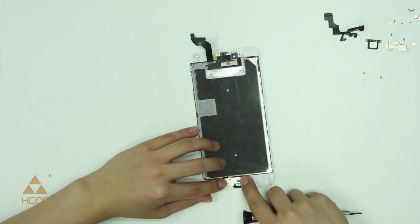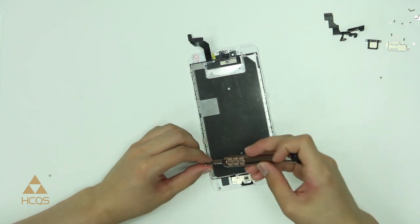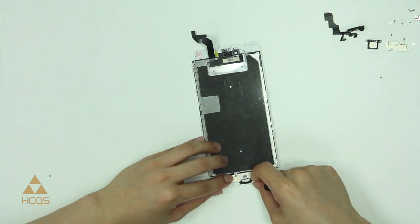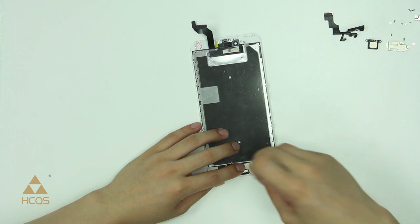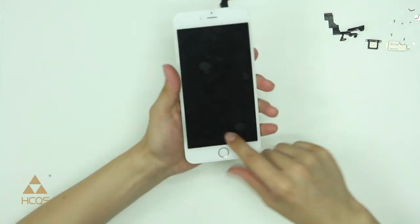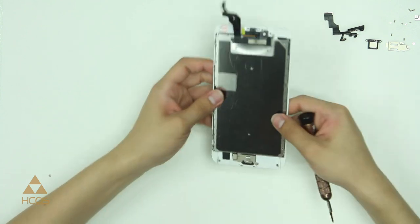Once you have your screws installed, you can go ahead and put the metal panel back behind the home button. Make sure that your home button is clicking at this point. If it's stuck, you may need to loosen up one of the screws about a quarter of a turn or so.